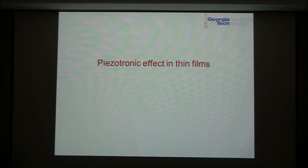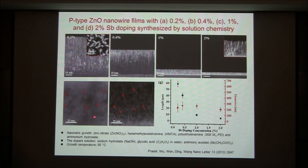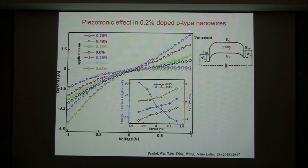The piezotronic effect also exists in thin films — it does not have to be at the nanoscale. It's a universal effect. We have P-type zinc oxide nanowires with antimony doping. When the antimony doping level increases from 0.2% to 2%, the growth rate changes dramatically. But the material does show P-type characteristics. The P-type material can also be a piezotronic transistor.